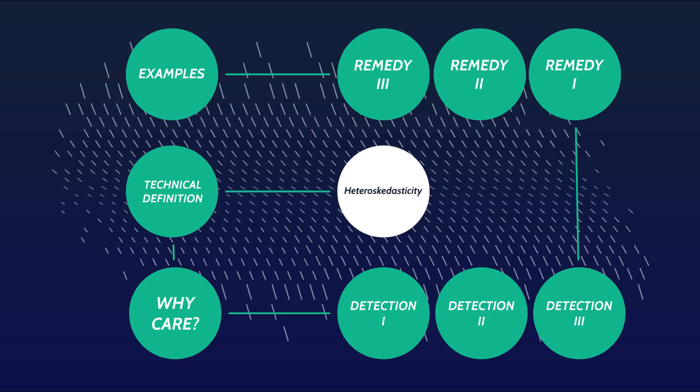Hi guys, it's Justin Zeltzer here from Z-Statistics, now doing a suite of videos looking at the assumptions underlying regression — and more to the point, what happens when we violate those assumptions. This first video is to do with heteroscedasticity — that's the name of the game today.